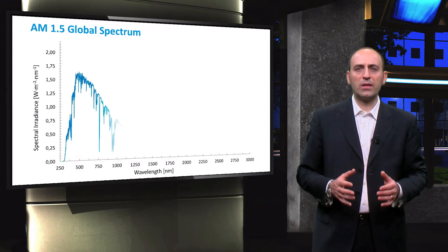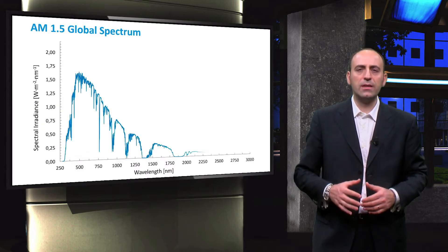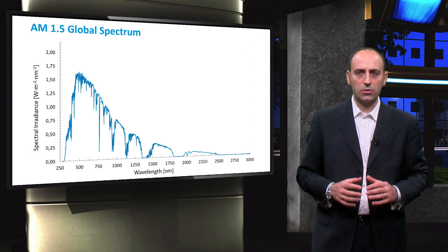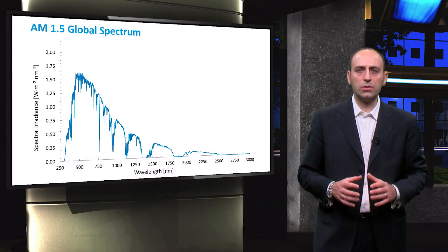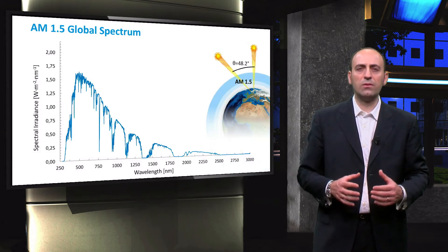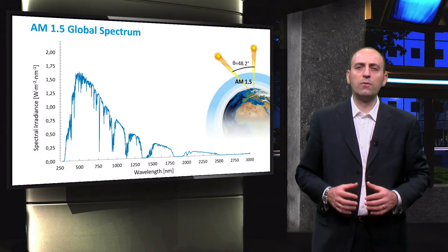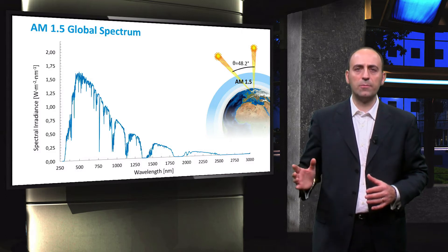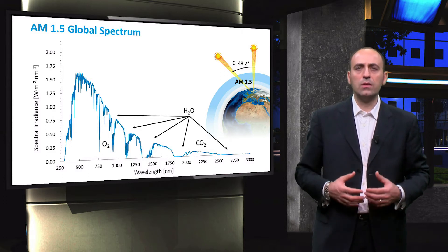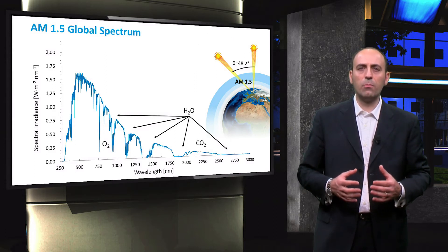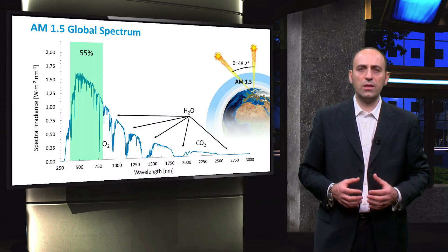The standard spectral irradiance of natural sunlight is defined by means of the AM1.5 global spectrum, which is measured on the Earth's crust after sunlight travels through the atmosphere. The absorption of different molecules yields to these dips, and as you may notice, the spectral irradiance is not evenly distributed, but most of it is located in the visible part where 55% of the incoming irradiance is condensed.